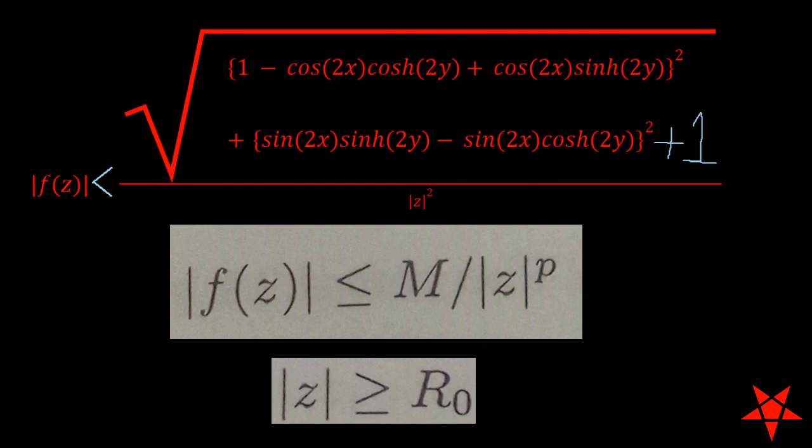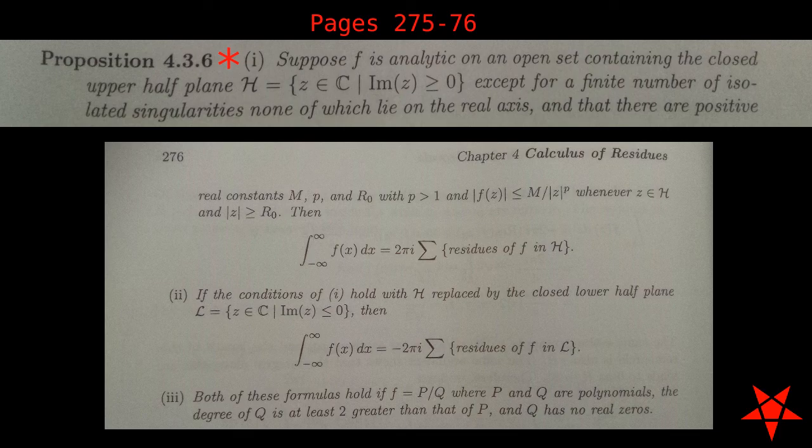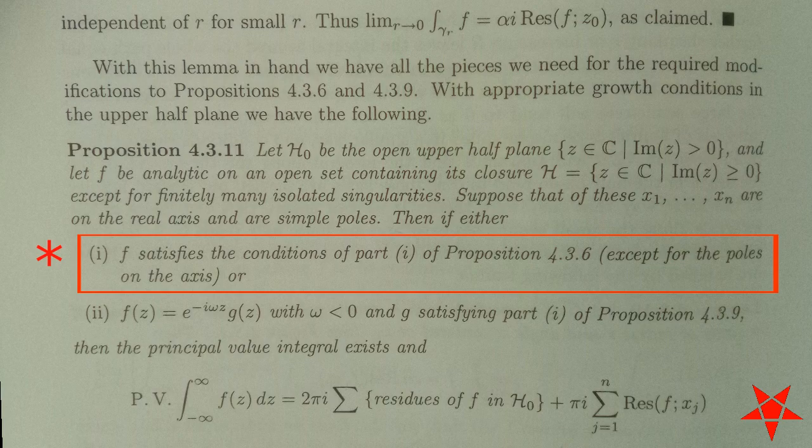The inequality for the absolute value of f of z is valid specifically for the case where the absolute value of z is greater than or equal to a certain positive minimum value r naught. For our purposes, an absolute value of z greater than or equal to an r naught value of 1 satisfies this condition in Proposition 436. And with the requirements of Proposition 436 satisfied, we can justify the use of Part 1 of Proposition 4311.